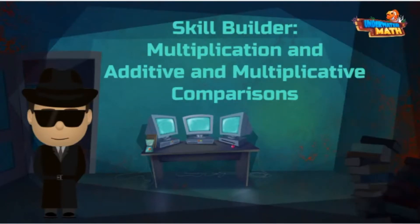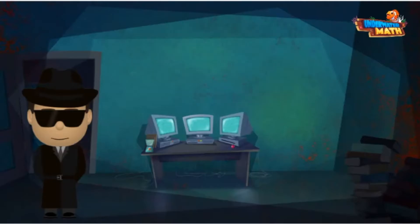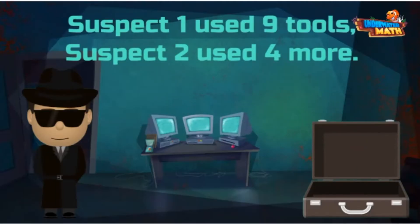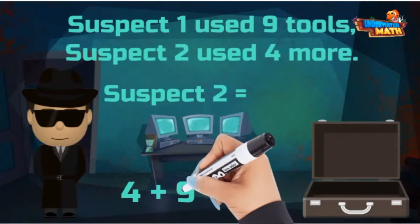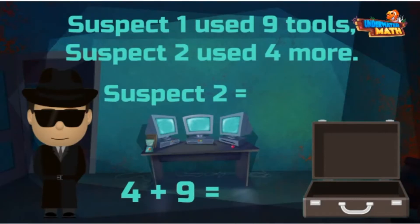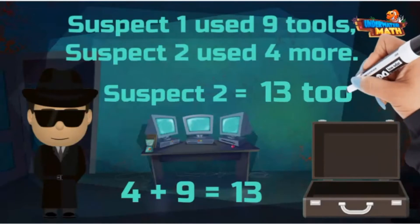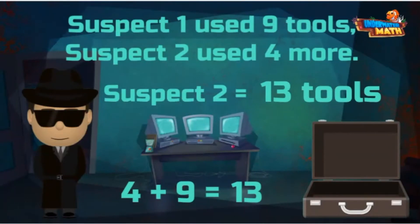I am working on a very important case, but I need to decode some clues to solve it. Here's the first clue: suspect number one used nine tools when breaking into the bank vault, but suspect number two used four more than that. Since the clue said four more than suspect one, I can add four to nine to determine that suspect two used 13 tools to bust open the bank vault.